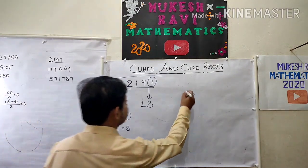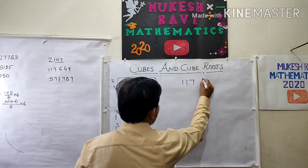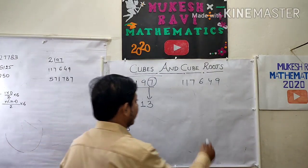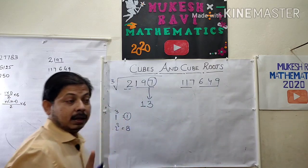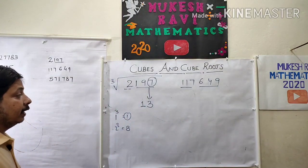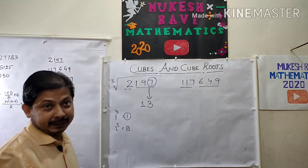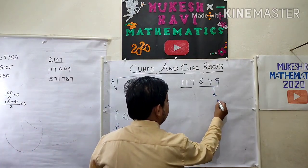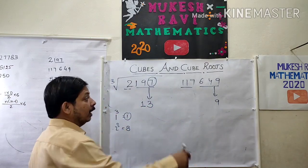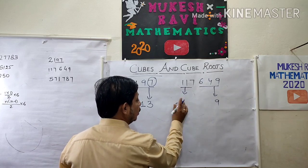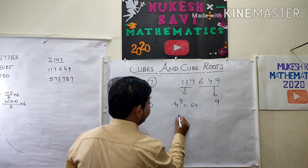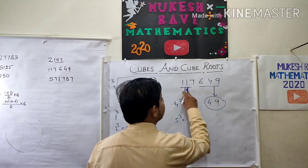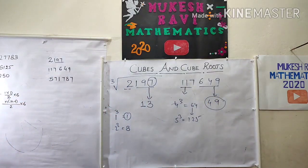Suppose 117649. The unit digit is 9. Whenever 9 is there, the cube root ends with 9. Now check the remaining part: 117 is between 4³ = 64 and 5³ = 125, so the lesser number gives 4. Therefore the cube root of 117649 is 49.